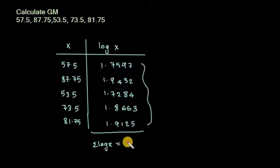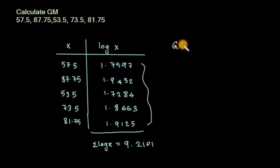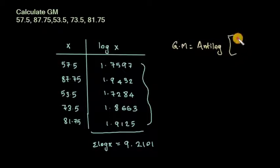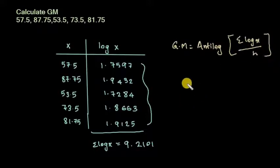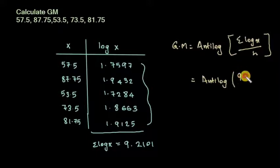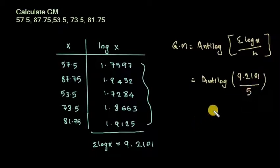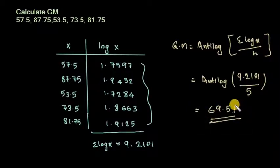Adding all log x values, we get Σ log x = 9.2101. Then geometric mean GM = antilog of (Σ log x / n) = antilog of (9.2101 / 5), and the answer is 69.51.